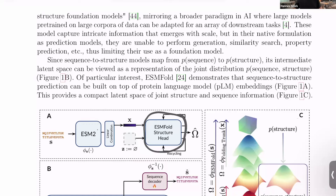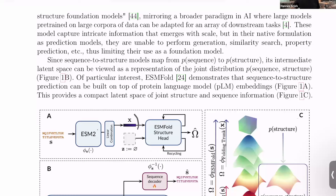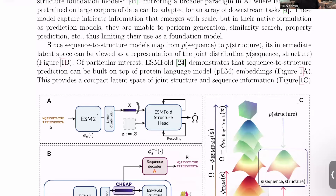In ESMFold, the structure module takes in a pair representation and updates it, but here the pair representation is a very simple one and doesn't come from the language model. In the code, you just import the OpenFold structure trunk. The sequence representation carries a lot of information — maybe that's why it's surprising that the pair representations can be initialized to zeros and the stuff still works so well. This is a latent space from which we know it captures structure well because we can throw the decoder on top and obtain structure from it.